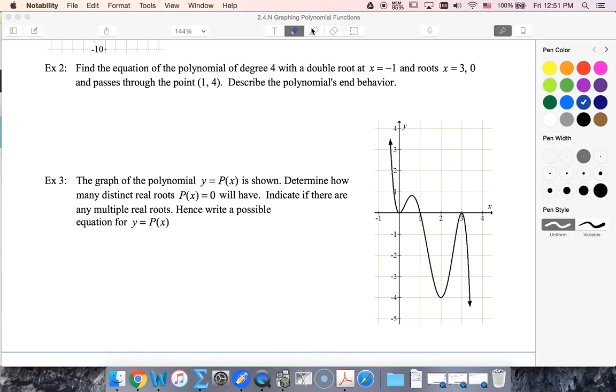All right, now we're told that we have a fourth-degree polynomial with a double root at x equals negative one and single roots at three and zero.